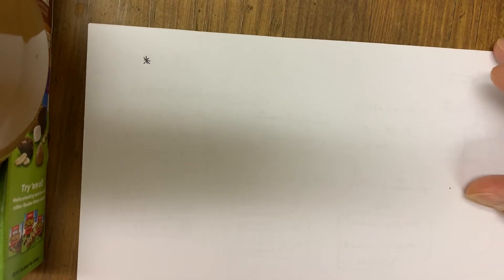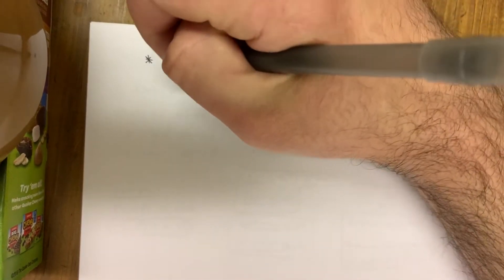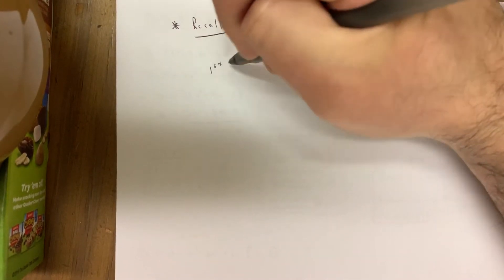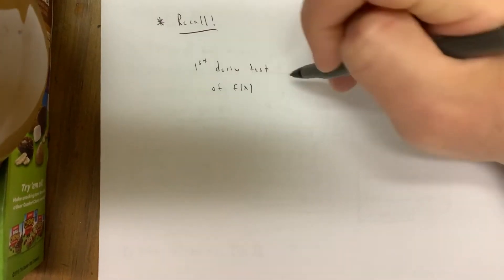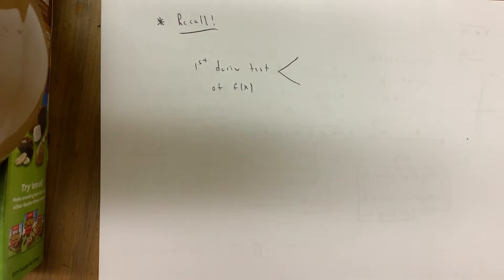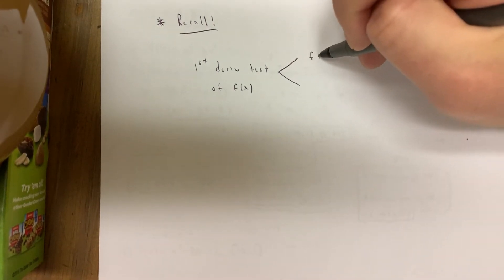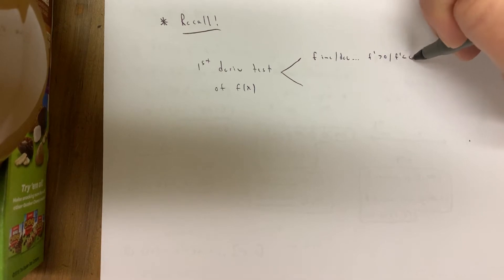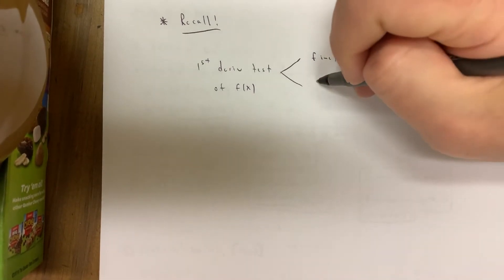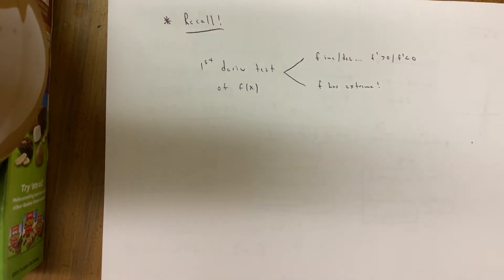Let's get our lesson going. Yesterday we spoke about the second derivative test, so we'll do a recall. Don't forget the first derivative test for f(x) — that's the collection of information the first derivative tells you. It tells you where f is increasing or decreasing, because f prime is positive or negative respectively. If you know when a function is increasing or decreasing, you know when f has extrema — maxes and mins.